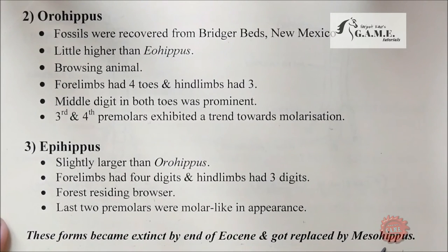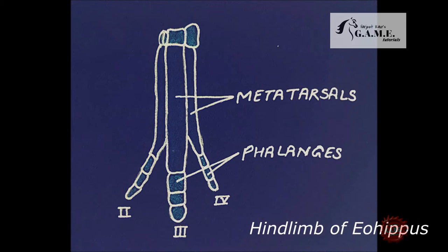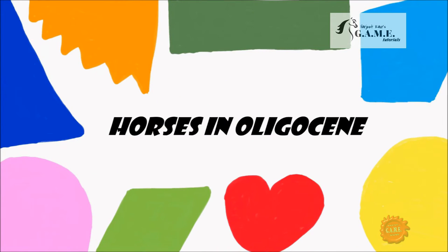Here you can see the forelimb of Eohippus and the hind limb of Eohippus — you can see the tarsals and phalanges. Next, we move to horses in the Oligocene.